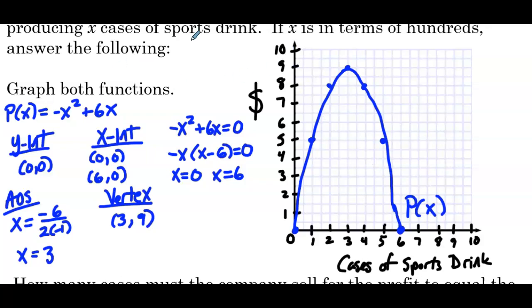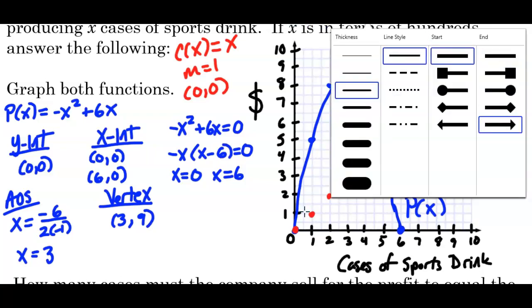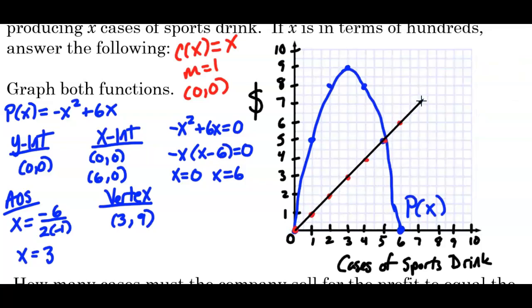And then we have C(x), which equals x. So that's a linear function with a slope of 1 and a y-intercept of 0, 0. So we have 0, 0. Slope of 1, based on our scale, is up two boxes, to the right two boxes, up two, to the right two, up two, to the right two, up two, to the right two, up two, to the right two, up two, to the right two. And I'll use the line tool here and draw in the linear function for C(x), and we'll label that C(x).